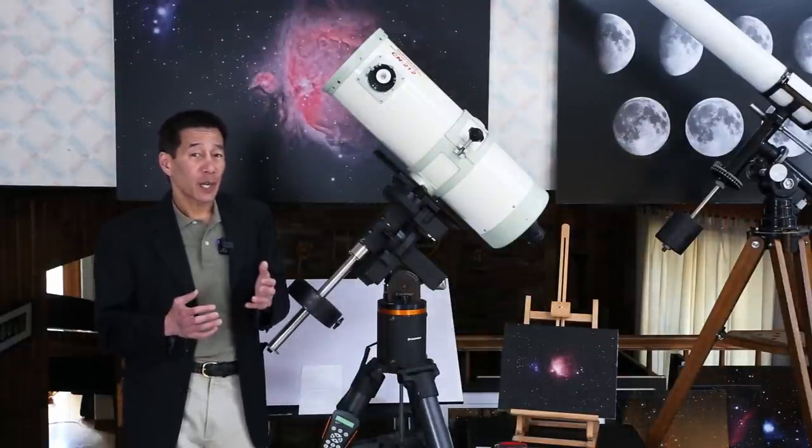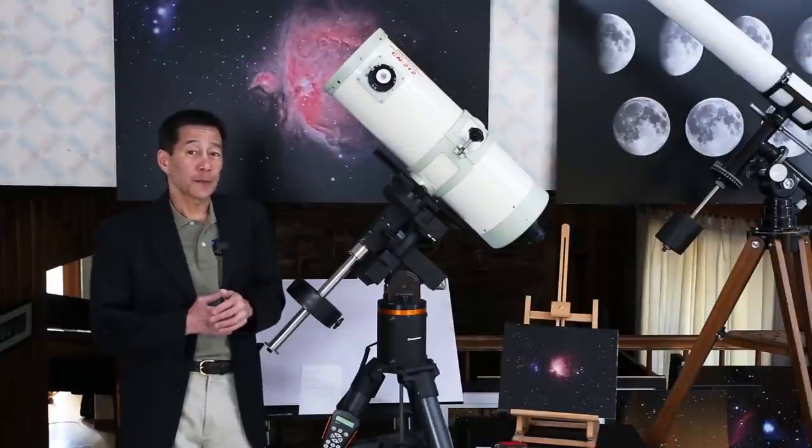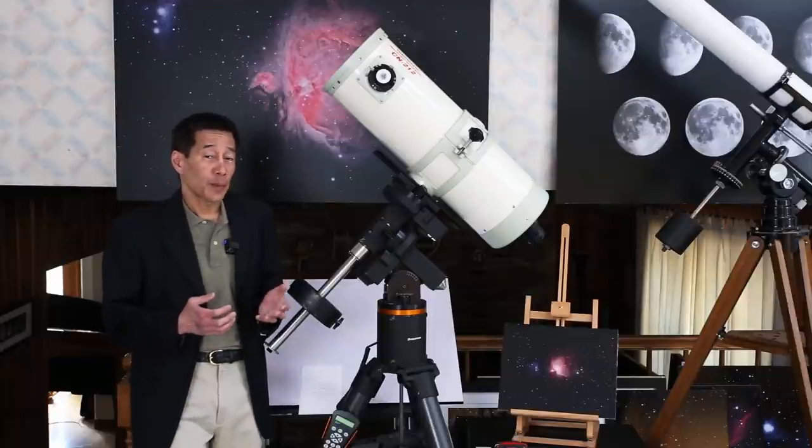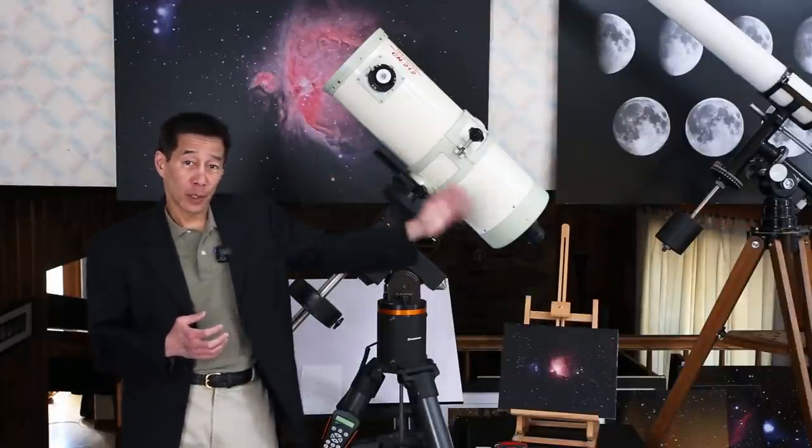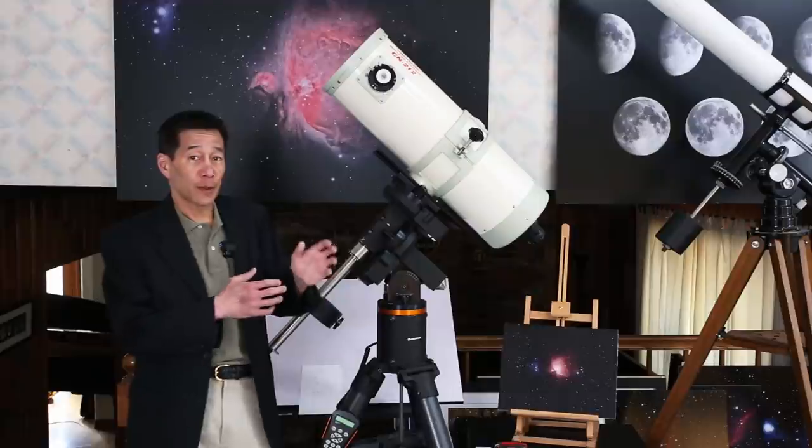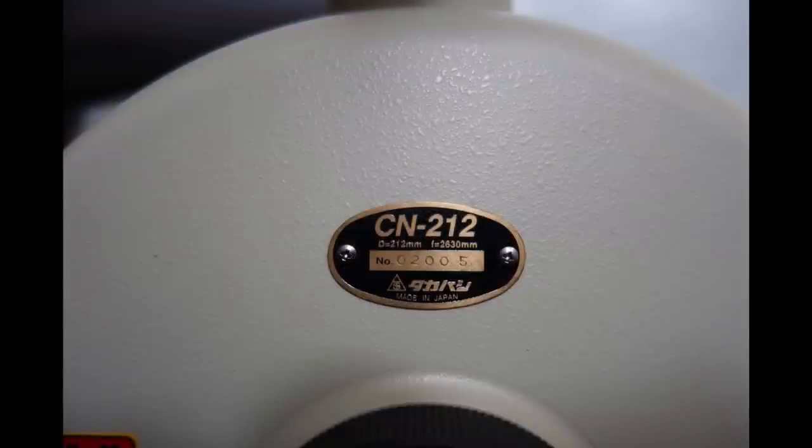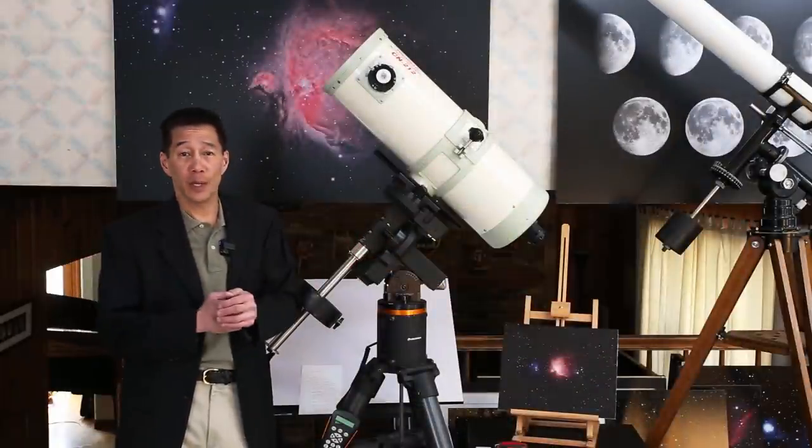If I were to guess, I would think that they designed this thing first as a cassegrain and then added the Newtonian function later. The reason for that being that the focuser and the finder are down towards that end and there's a very small nameplate in the back here that lists the focal length as 2630 millimeters. That is the focal length in cassegrain mode. There's no mention of Newtonian mode at all.